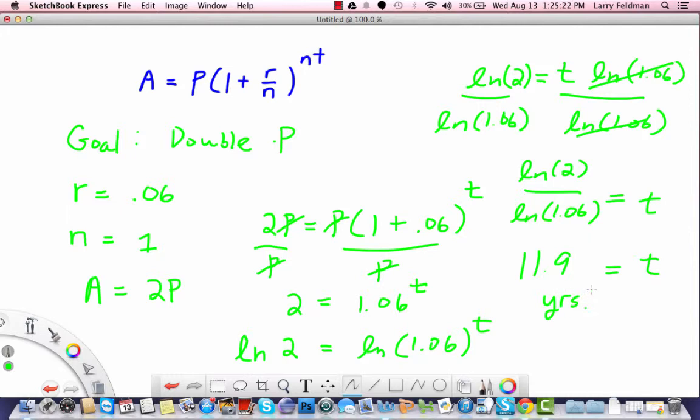So this is kind of an interesting case. We don't even need to know what the principle is, we just need to know that the person wants to double the principle. And given the other information like the annual rate, the number of times they want to compound per year, and the fact that they want to double, we can calculate the time. Ok so now let's look at the last example.